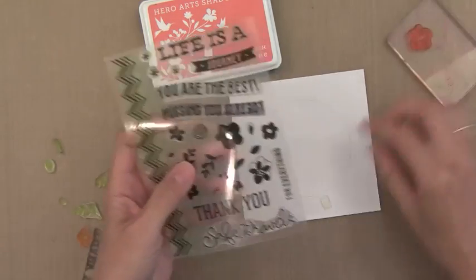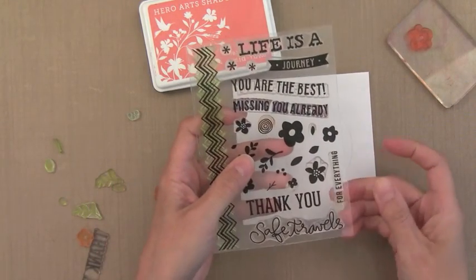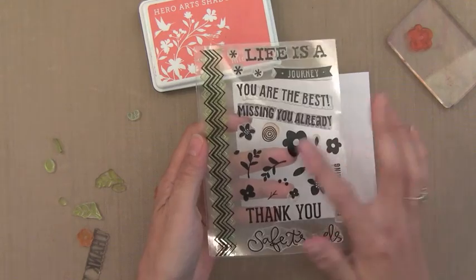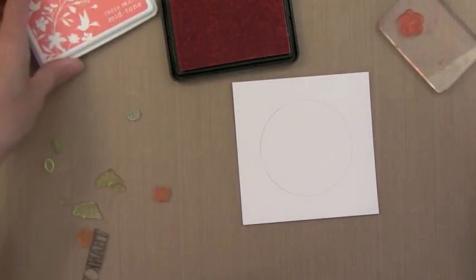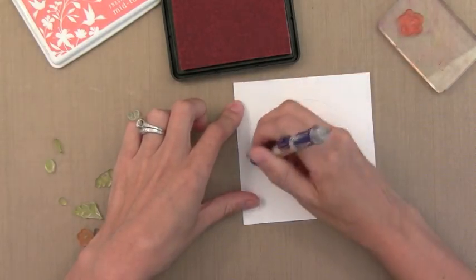Now I'm using Hero Arts Shadow Inks today along with this awesome stamp set. This is new from Simon Says Stamp. It's got all these great flowers that piece together. The stamp set I think is called Life is a Journey. It's brand new.